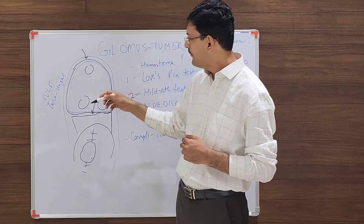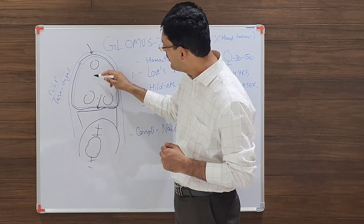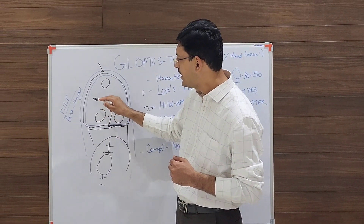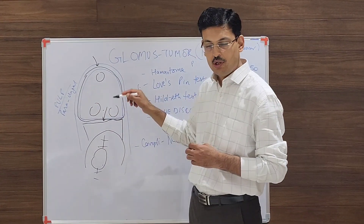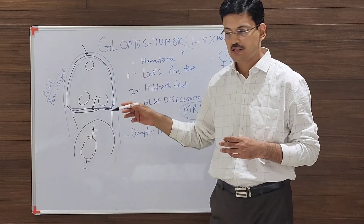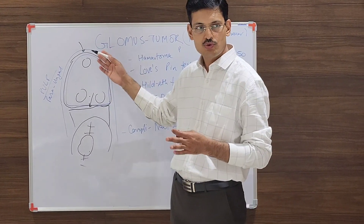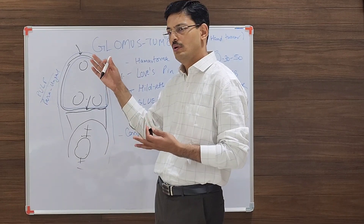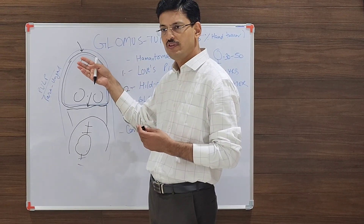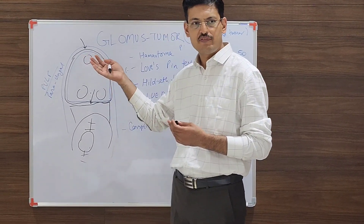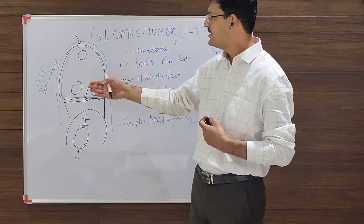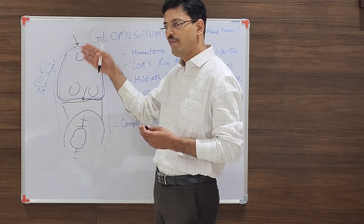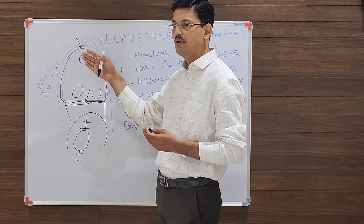Slowly this old nail will shed out and the new nail will start growing. You can fix the nail plate temporarily with figure-of-eight sutures, then remove those sutures after five to seven days. The old dead nail will eventually be shed off and the new nail will grow in.